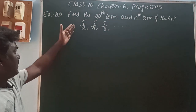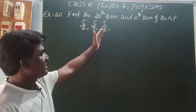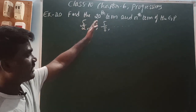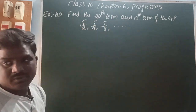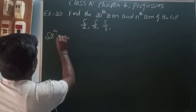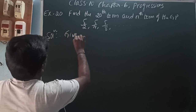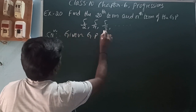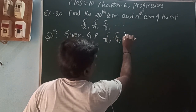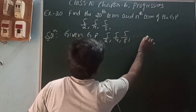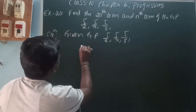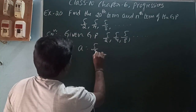So here, Example 20: Find the 20th term and nth term of the GP. They have given that 5/2, 5/4, 5/8, and so on. They are asking us to find the 20th term and nth term. So from the GP, first find the first term. The first term a is equal to 5/2.